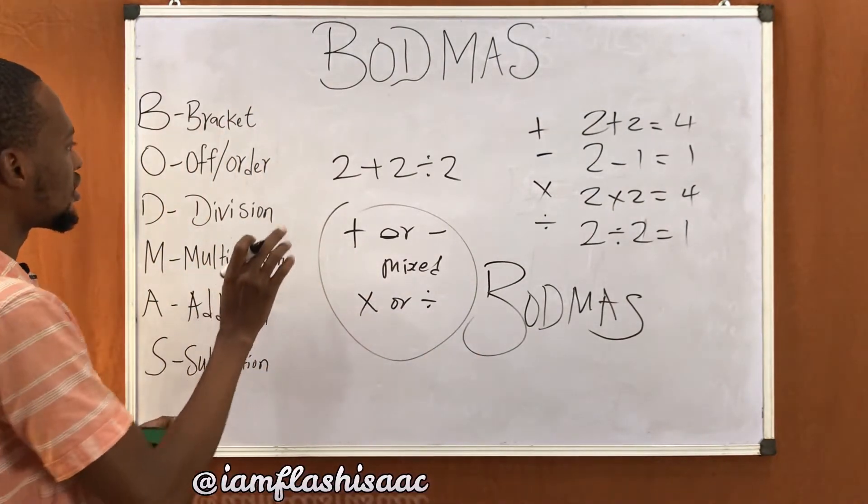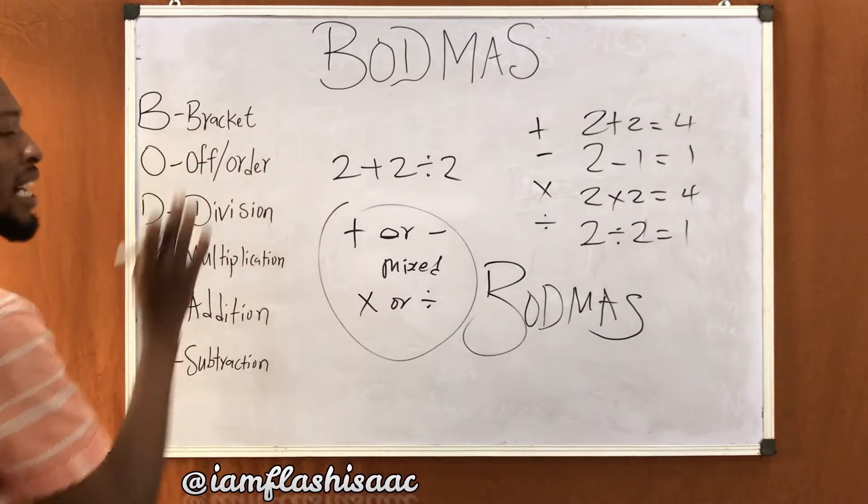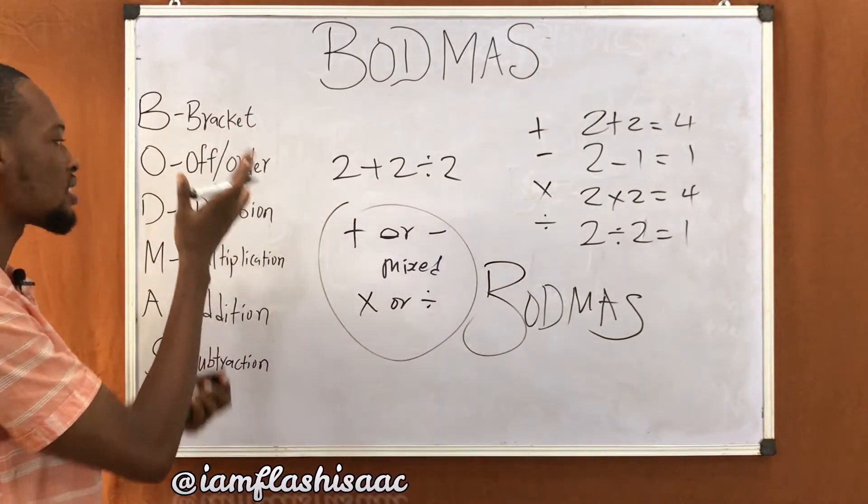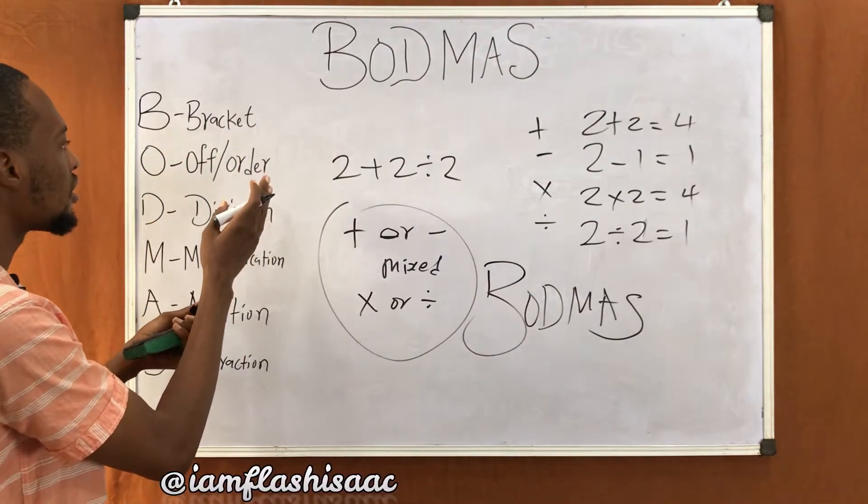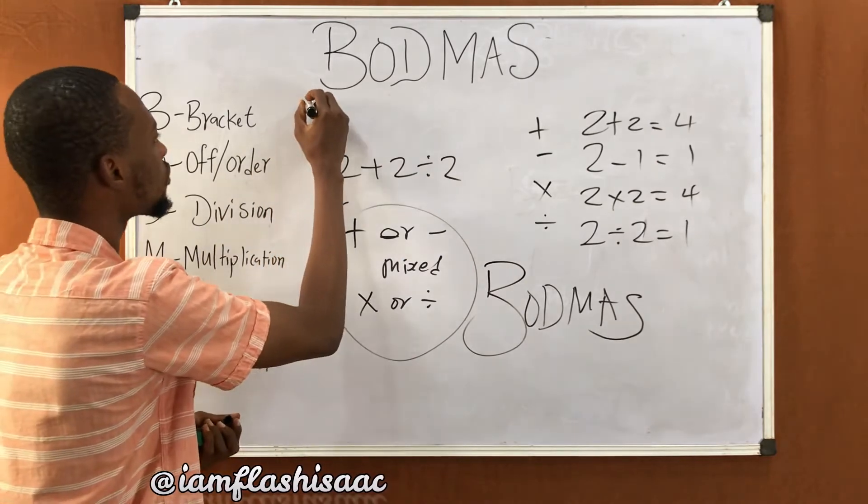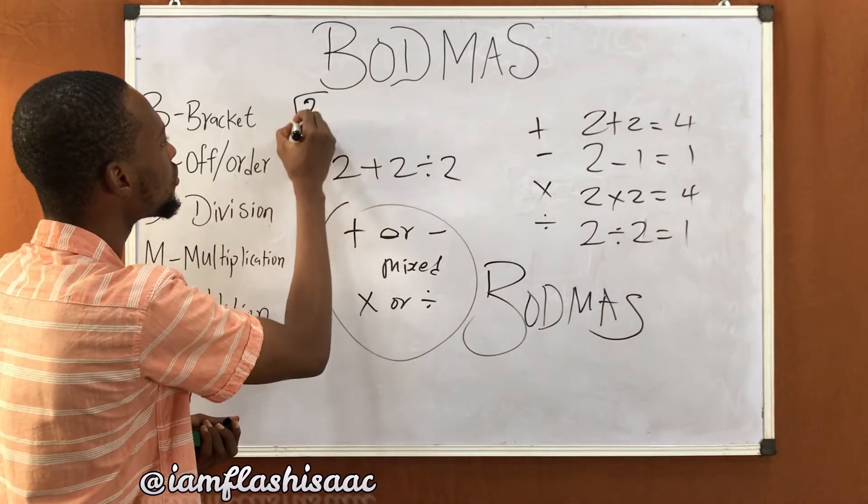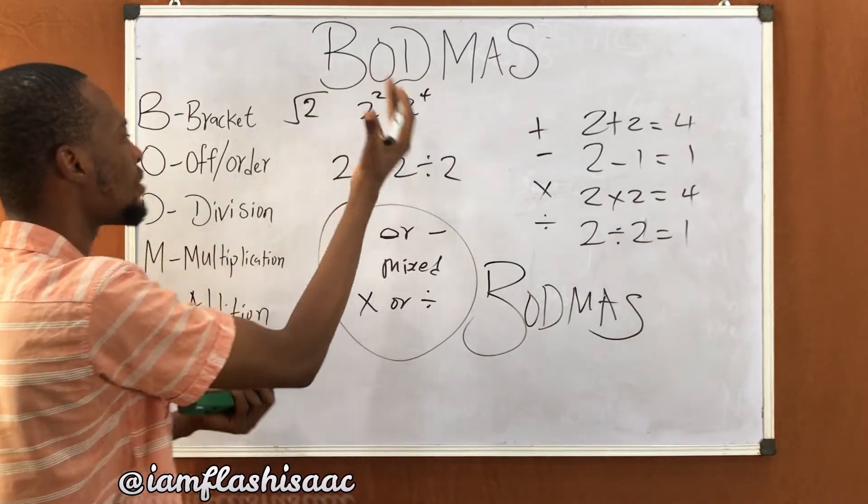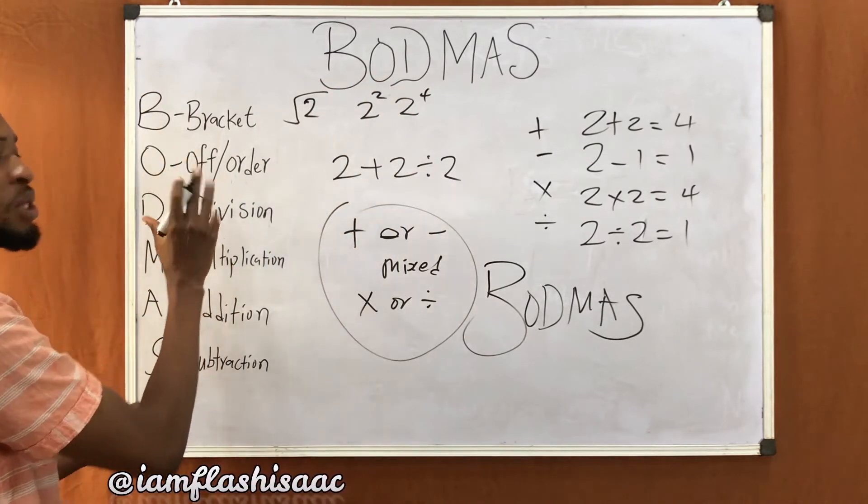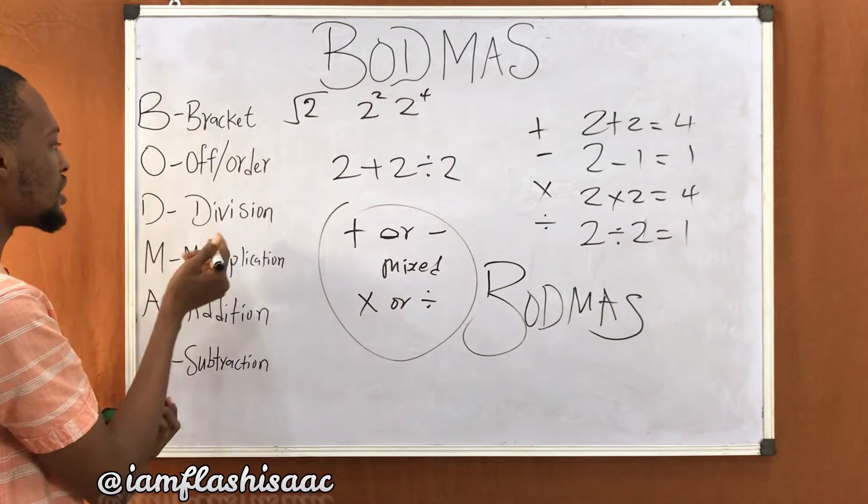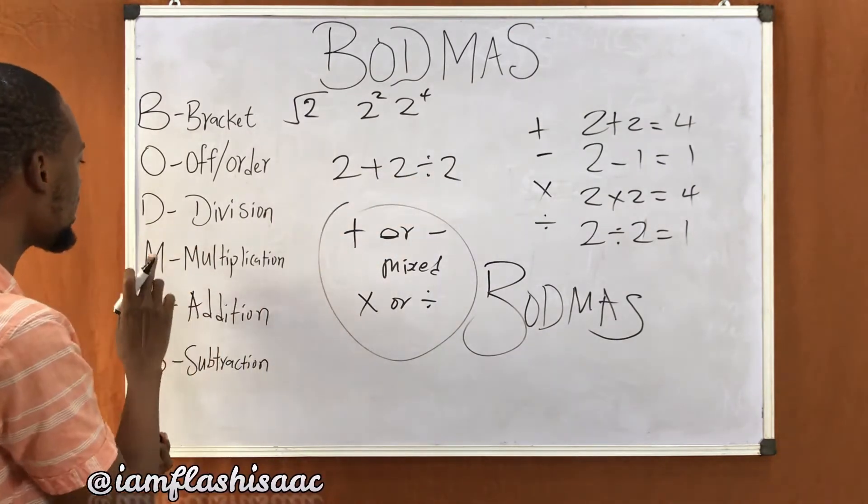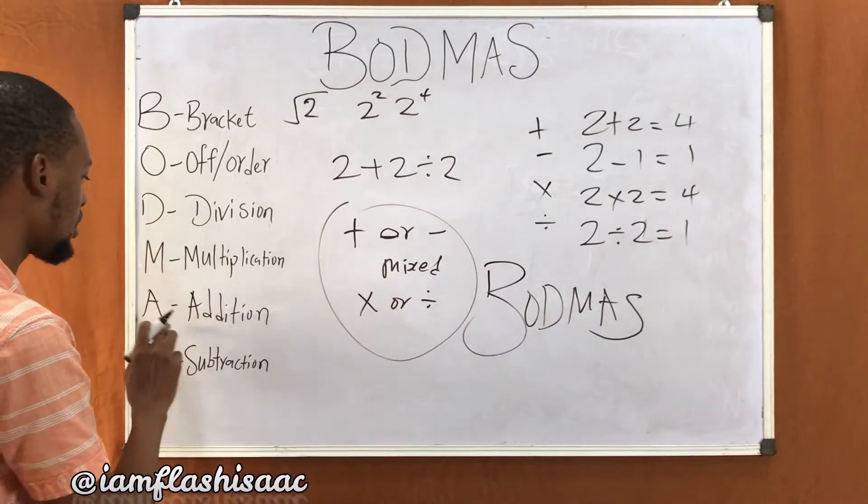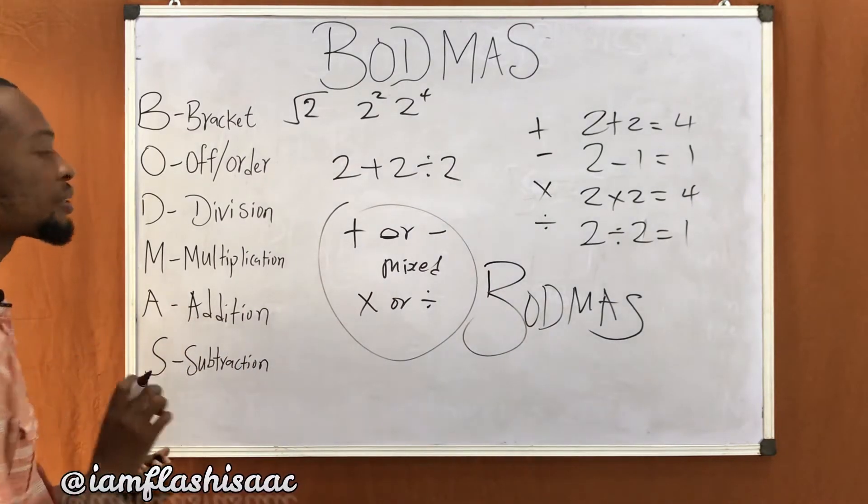Now BODMAS: B stands for bracket, O is off or order, that is squares or square roots or powers, two to the power of four, these are powers or off. That is the meaning of O. D stands for division, M stands for multiplication.